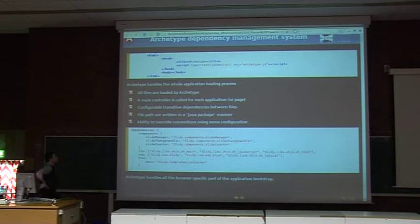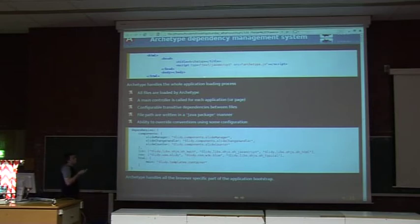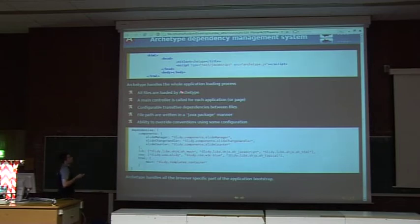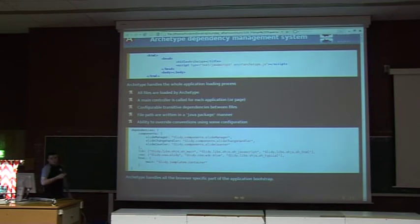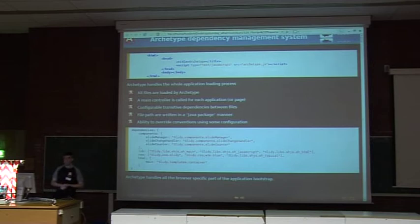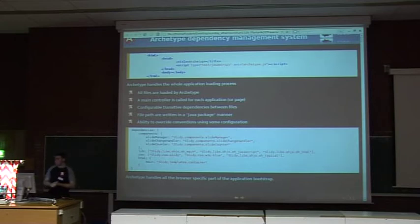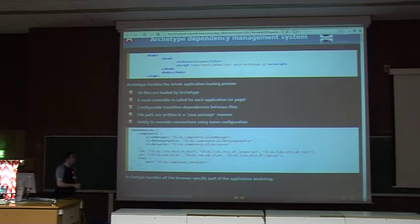Here's the typical Archetype JavaScript web page. You just have a title, then you insert the JavaScript tag for the library — there is no body needed. You've got the template system loading. Archetype will load all the files needed, look at the location, and load the controller for the page. The controller will then launch everything necessary using the dependency system. We have configurable and transitive dependencies between files.